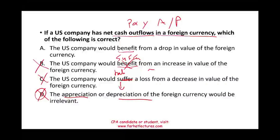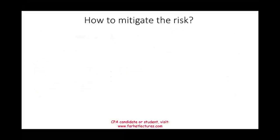By process of elimination, the answer is: the U.S. company would benefit from a drop in the value of the foreign currency. They want the foreign currency to weaken because they must purchase it — if it's weaker, they need fewer U.S. dollars. In the next session we'll look at how to mitigate foreign currency risk for net cash outflows, net cash inflows, AP and AR exposures. Good luck — this concept is important on the CPA exam.